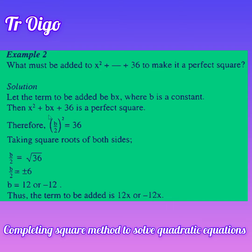That expression must be a perfect square. To get the value of b, we recall that for a perfect square, (b over 2a) squared equals ac. Here a is 1 and c is 36, so (b over 2) squared equals 36. Taking the square root of both sides, b over 2 equals the square root of 36.